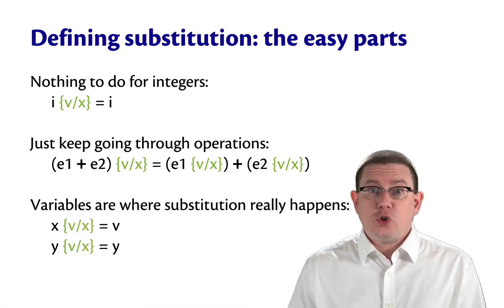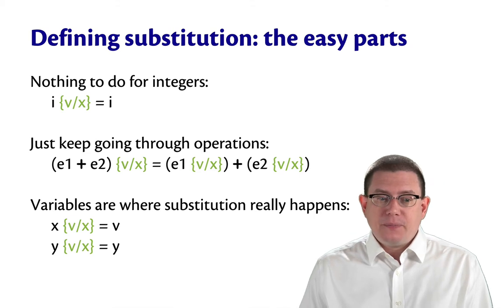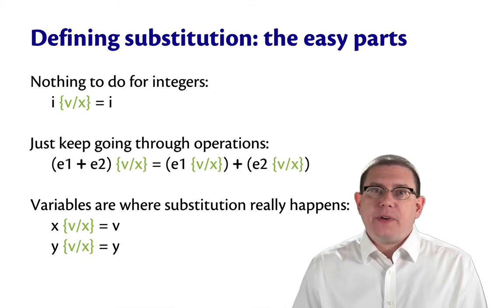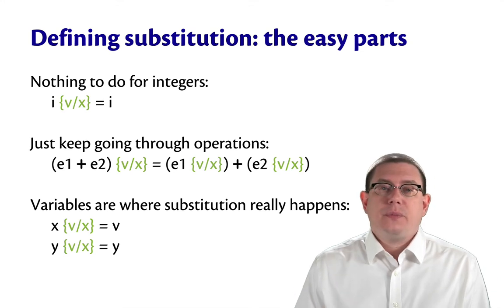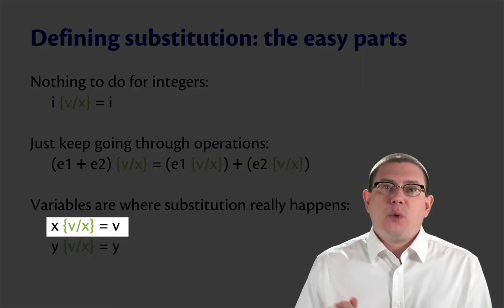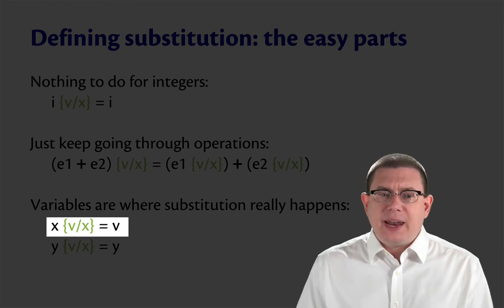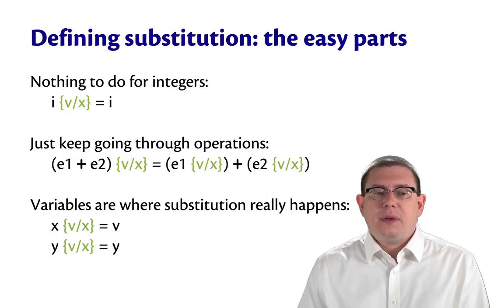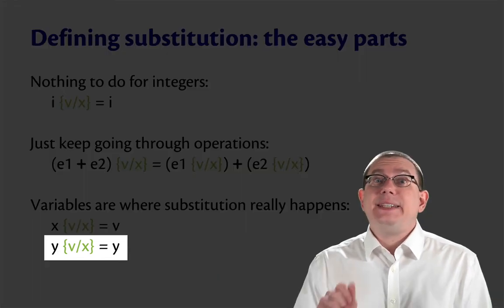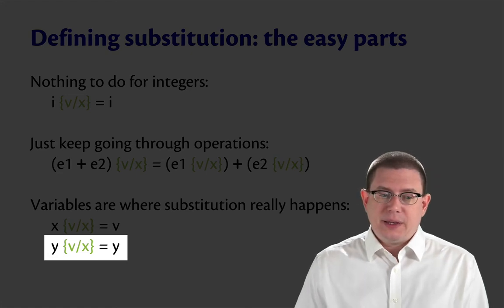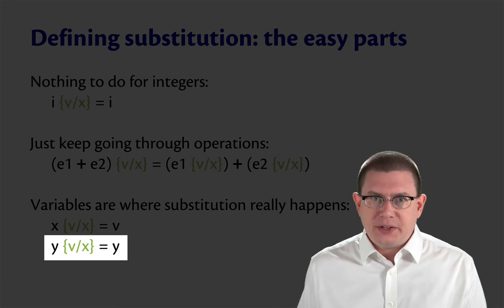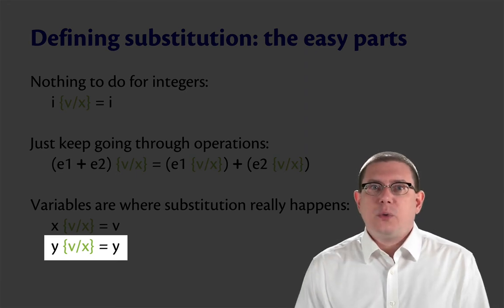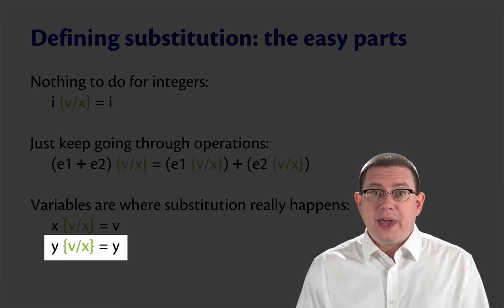Variables are where the substitution really ends up happening. It depends on whether the variable name is the one being substituted away or not. So if you see x with v substituted for x, you're going to replace that x with v. But if you see y, a different variable name than x, it's a different variable, so you should leave it untouched. So y with v substituted for x remains y.